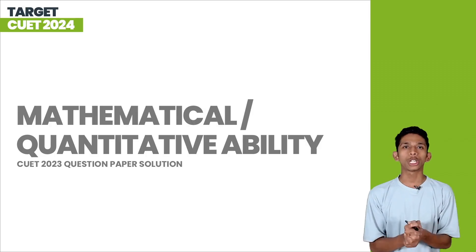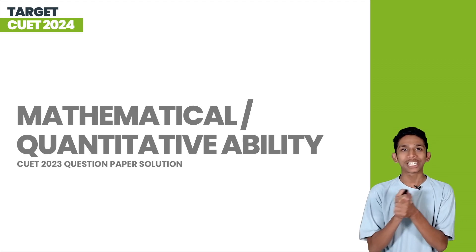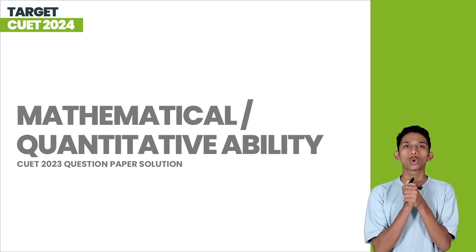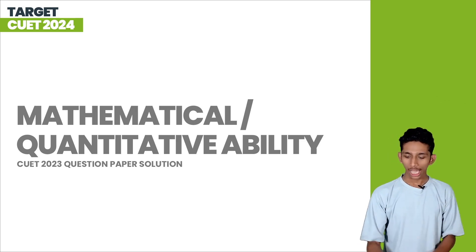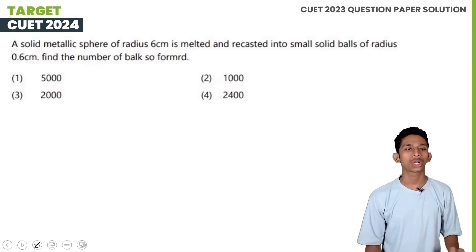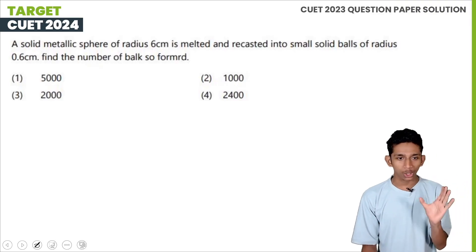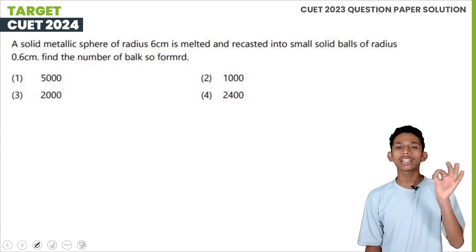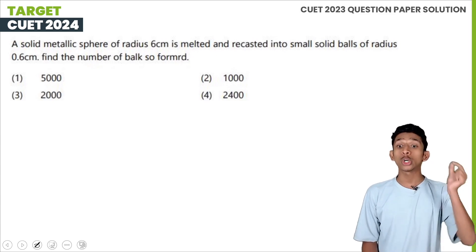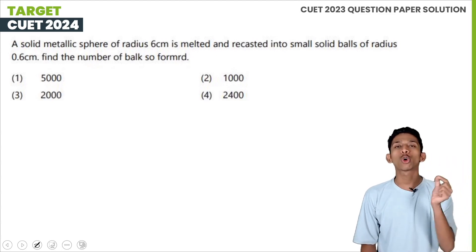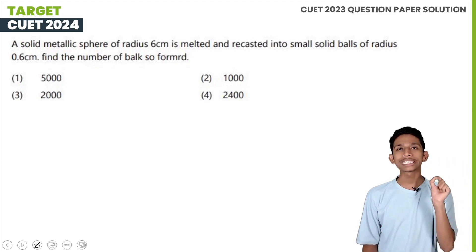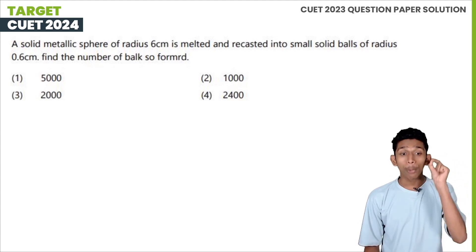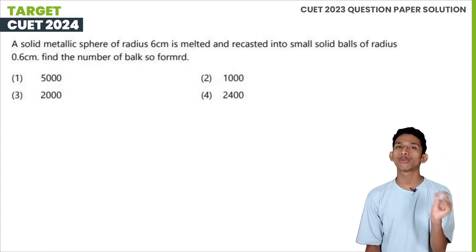CUET-PG questions for the first session. We will discuss some quantitative ability problems. First: a solid metallic sphere of radius 6cm is melted and recasted into small solid balls of radius 0.6cm. Find the number of balls so formed.